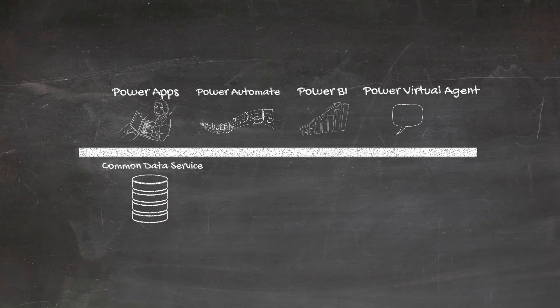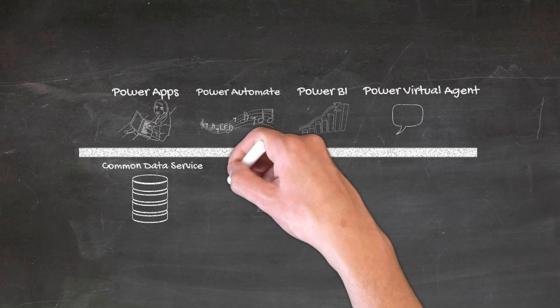The Common Data Service is an abstraction across multiple Microsoft underlying data storage technologies, bringing the best of all those services in the form of the Common Data Service. It implements the Common Data Model, which takes Microsoft's decade worth of knowledge of business application data structures and formats, and implements that in an open-sourced version that the Common Data Service allows you to store data in.